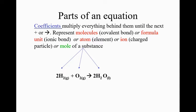Let's look at the different parts of the chemical equation. The coefficients are the numbers written in front of the compound or element. Those multiply everything behind them until you get to a plus or an arrow. The coefficients have a compound behind them that's either a molecule which are covalently bonded, formula units which are ionically bonded with a metal in the first position, atoms, ions, or moles. When you have a one coefficient, just like with subscripts, we don't write the one.